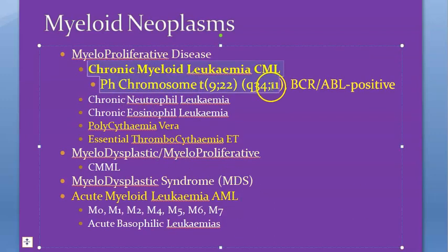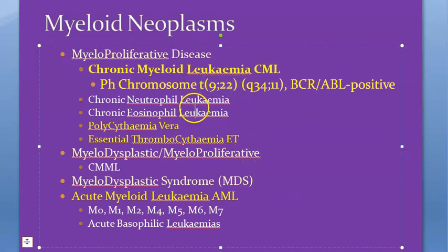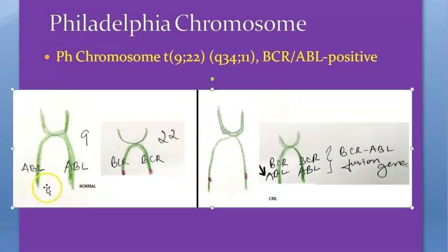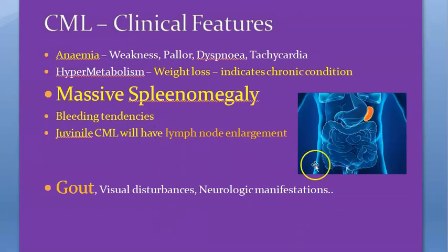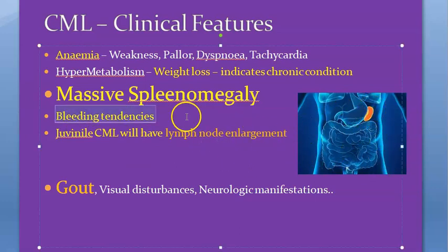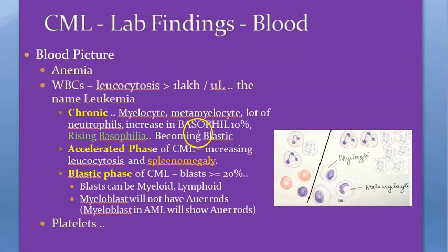In chronic myeloid leukemia, the Philadelphia chromosome involves a translocation of chromosomes 9 and 22 - this is very important to write in the exam: t(9;22), BCR-ABL positive. Chromosome 9 carries ABL and chromosome 22 carries BCR, and a translocation creates a BCR-ABL fusion gene. Patients will have massive splenomegaly, anemia (typical of all leukemias), bleeding tendency, and can also have gout.